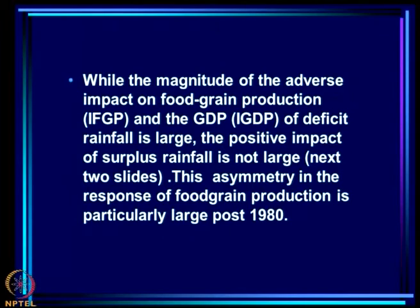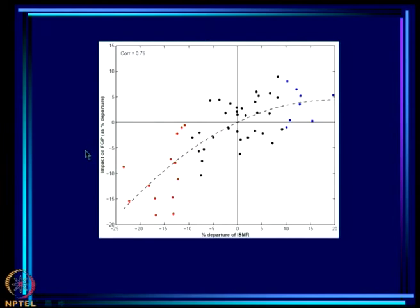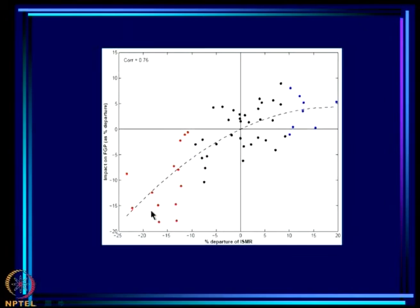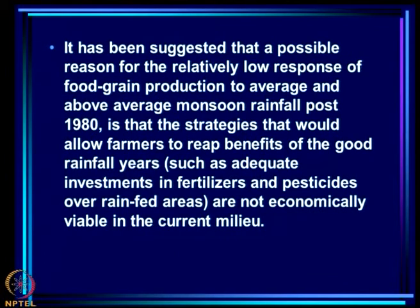This asymmetry in the response is particularly large after the 1980s. The food grain production curve is rather flat on the positive side, but shows a very sharp impact on the negative side as deficits become more severe; the same story holds for GDP. A possible reason for the relatively low response of food grain production to above-average rainfall post-1980 is that strategies allowing farmers to benefit from good rainfall years — such as adequate investments in fertilizers and pesticides over rain-fed areas — are not economically viable in the current milieu.